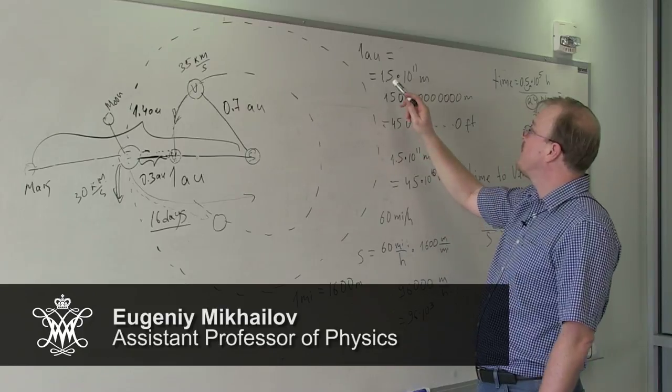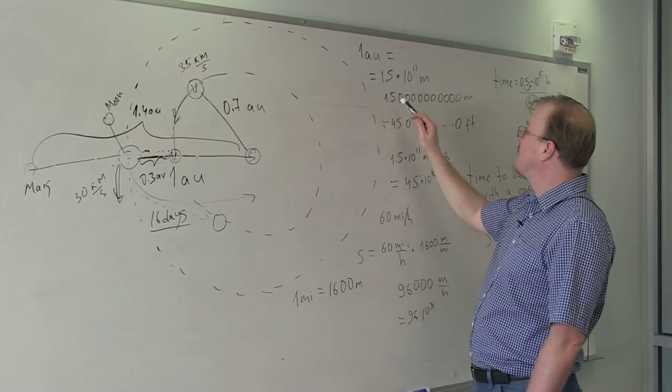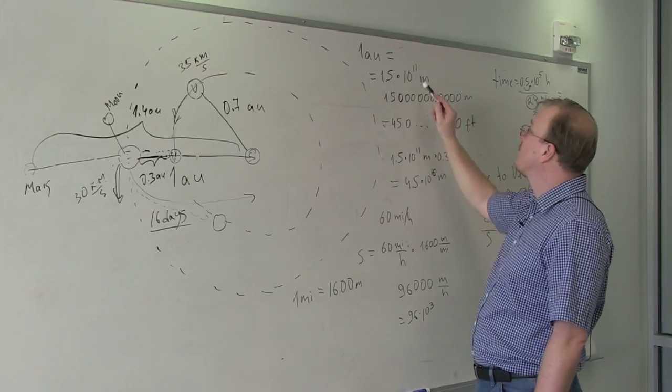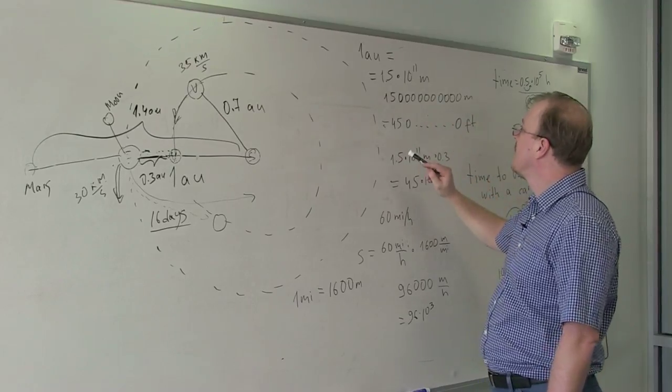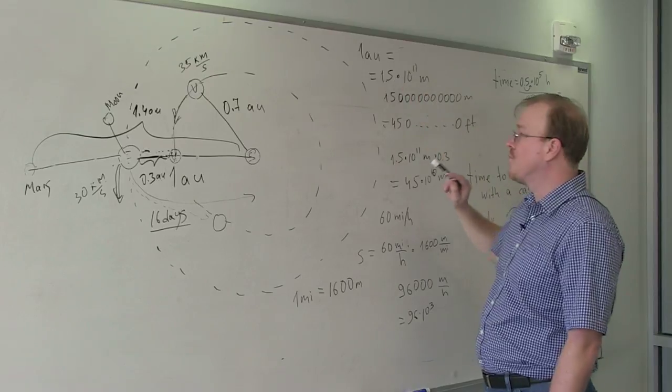One astronomical unit is 1.5 times 10 to the 11 meters, which is essentially 15 with 10 zeros. So this notation tells you how many zeros you add afterwards. Notice I say 10 zeros because we move this dot over here.